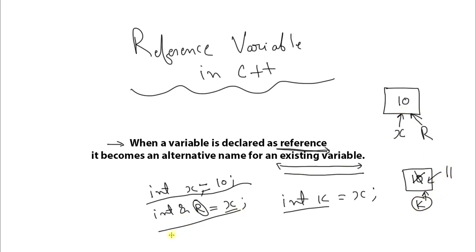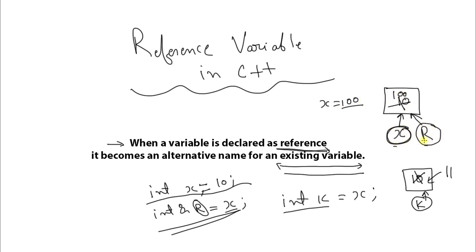But in the case of a reference variable, both r and x are pointing to the same memory location. So if you change that memory location — either using x = 100 — then 100 will be stored in that location. So if you print either x or r, both will print 100, because r is also pointing to that same memory location and whatever the location was holding has been changed to 100.